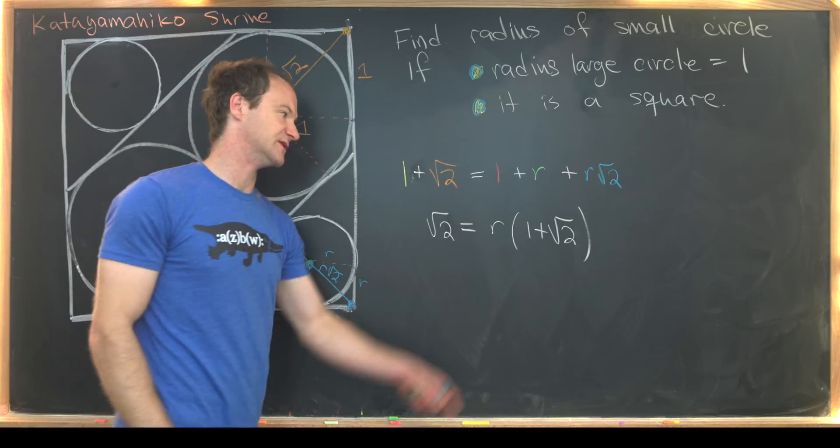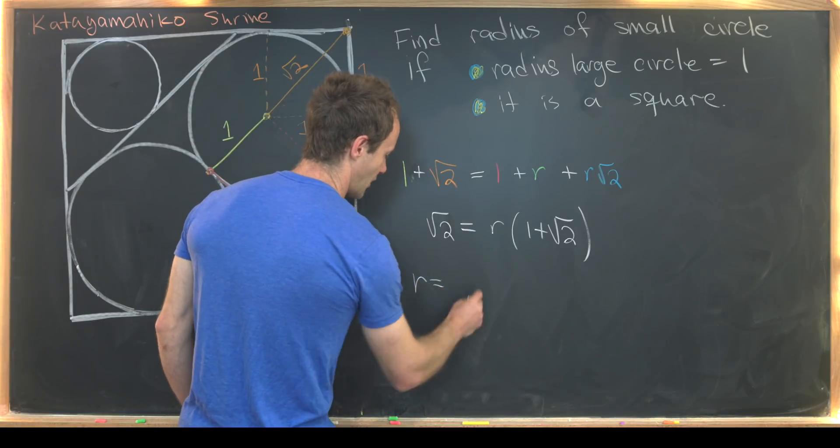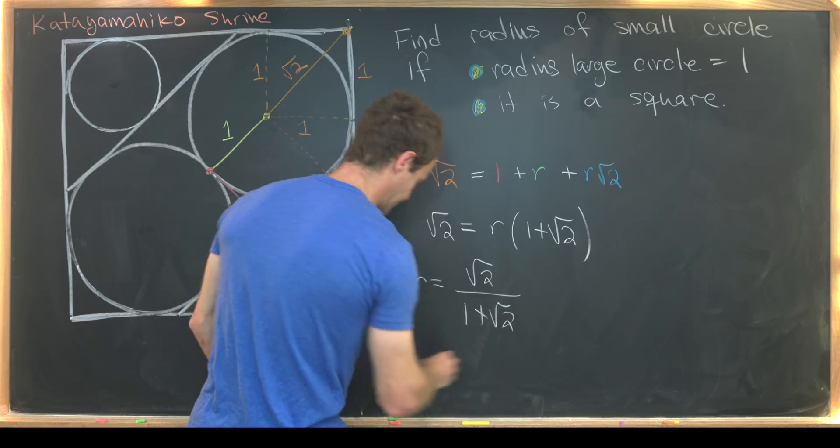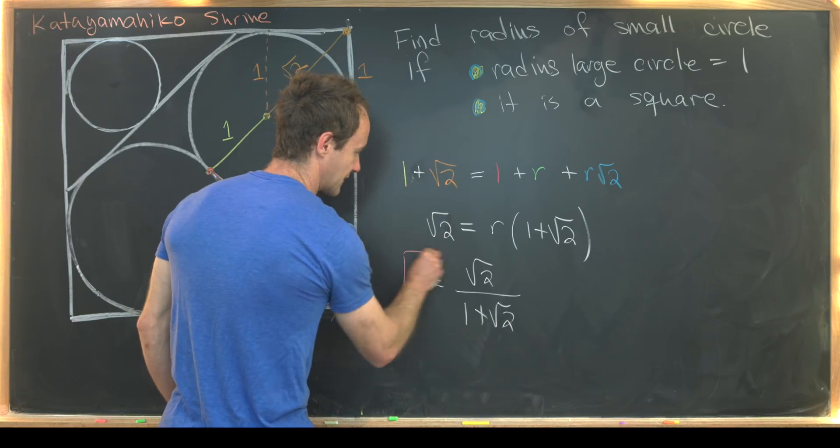Now we can just divide by 1 plus the square root of 2, leaving us with r equals the square root of 2 over 1 plus the square root of 2. And that would be our final answer.